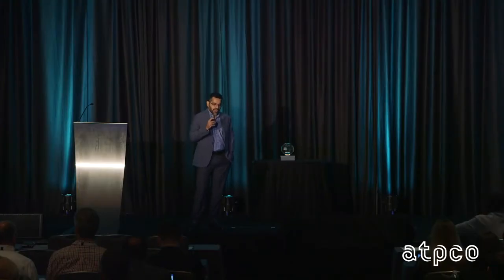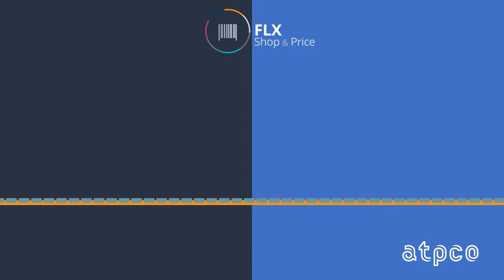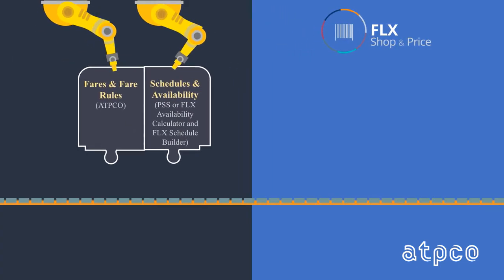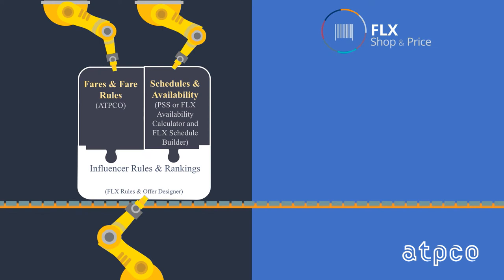The approach that will take most traction, I think, is you start with the base fare of ATPCO. You start with your schedules, which are OAG-based, and your availability. Then you put rules and rankings on top of that to really make that offer dynamic.